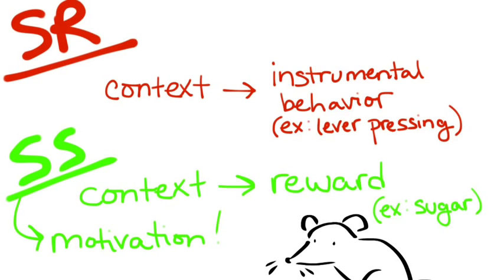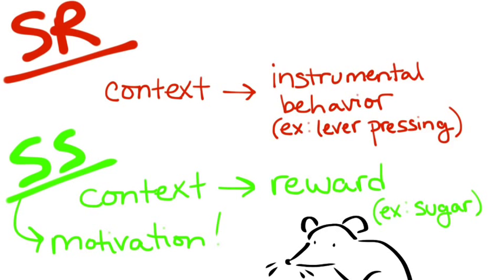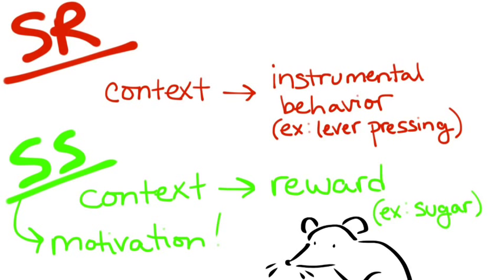So here's a recap. Two-process theory predicts that behavior is caused by two underlying processes, an instrumental SR association between the context and the instrumental behavior, and a Pavlovian SS association between the context and the reward. In other words, a motivation association.